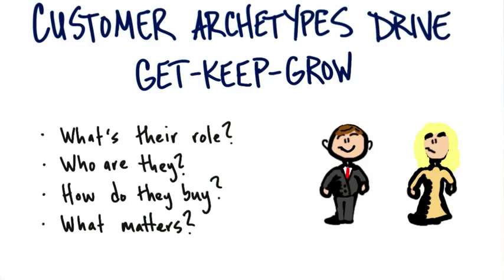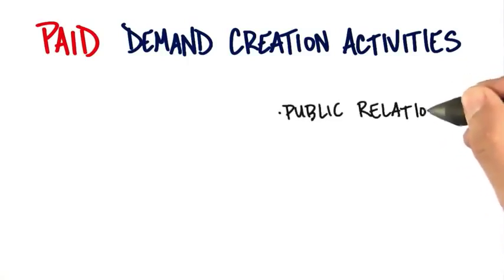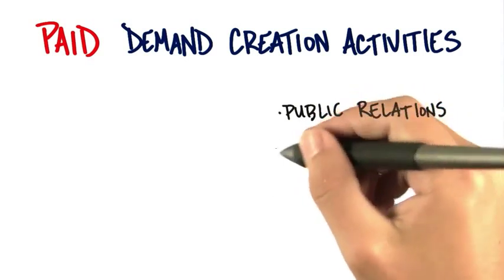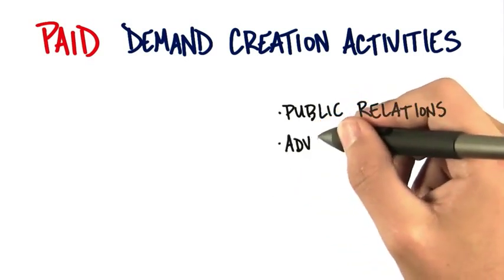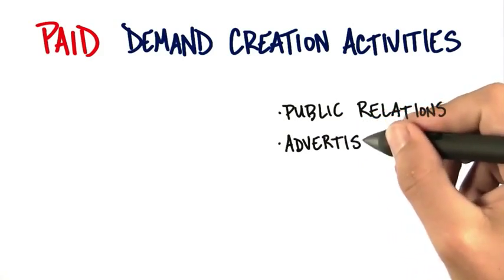There are two types of ways to create demand. The first set of things are paid demand creation activities — fancy way of saying I'm going to pay somebody to get your interest. The first people I might want to pay is a public relations agency. I might pay them a certain fee per month to help get stories about my products or my company appear in newspapers, on blogs, or in tech journals. Hiring a PR agency is a paid demand creation activity.